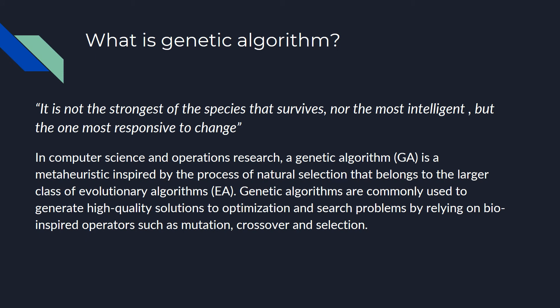As in nature, only the strongest survive — that's evolution. In computer science and operations research, a genetic algorithm is an algorithm of natural selection commonly used to generate high-quality solutions for optimization and search problems, by relying on bio-inspired operators such as mutation, crossover, and selection.